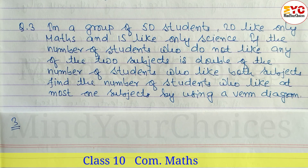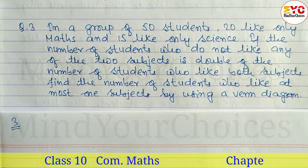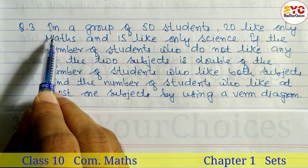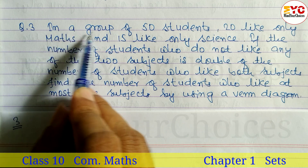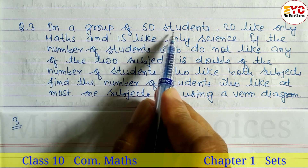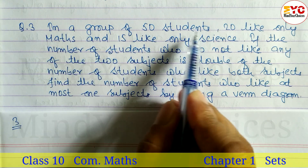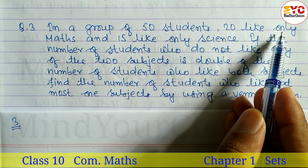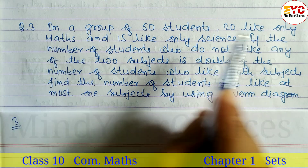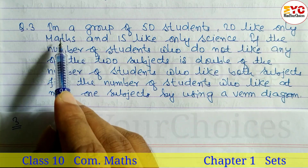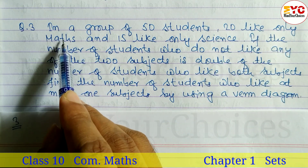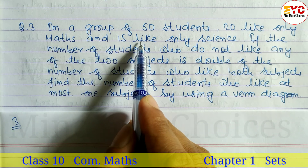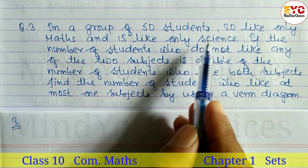This question is taken from class 10 Sets, chapter 1. In a group of 50 students, the total number of students is equal to 50. 20 like only math, and 15 like only science.